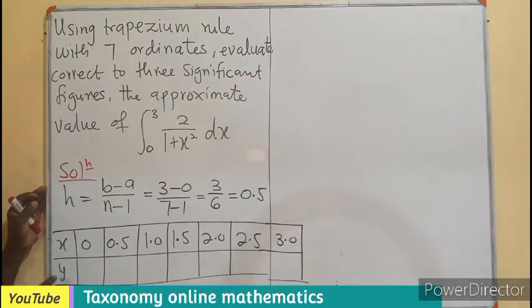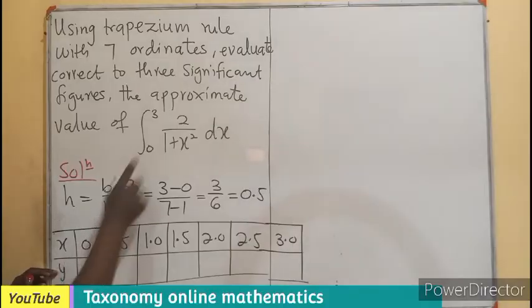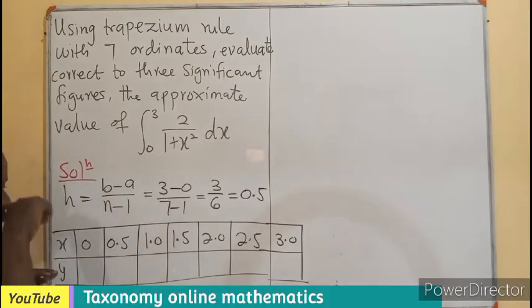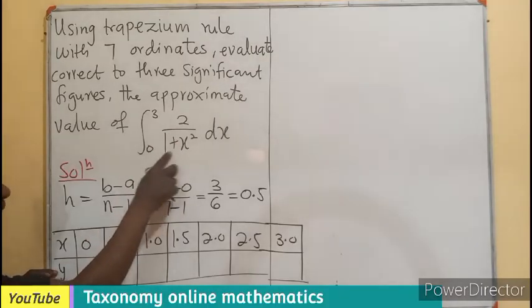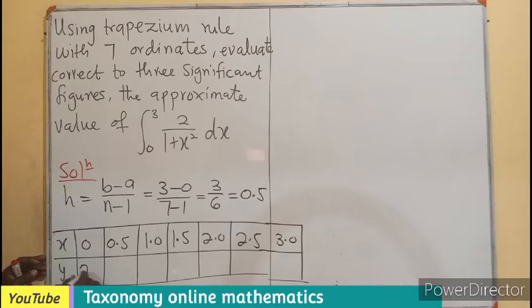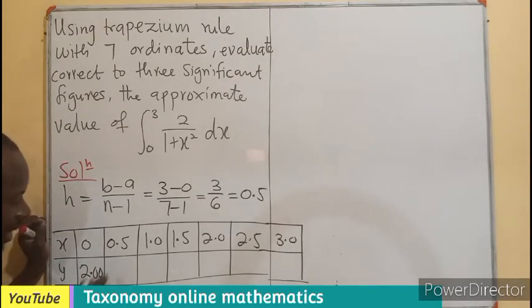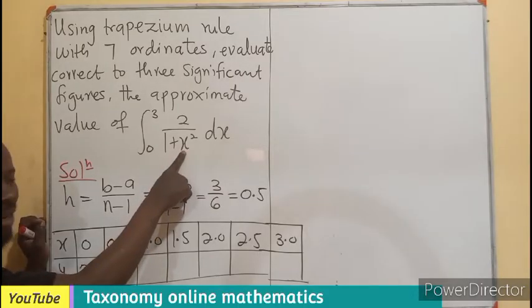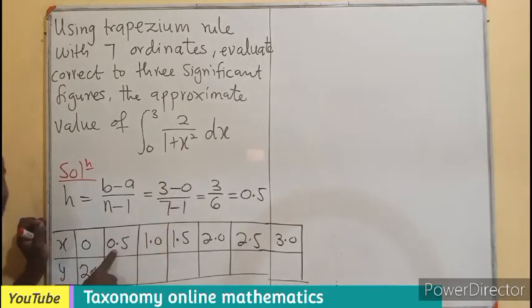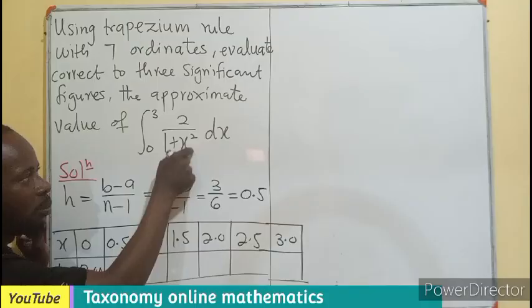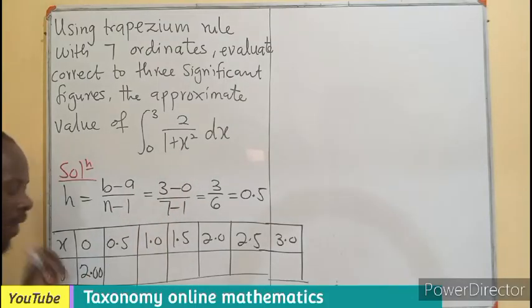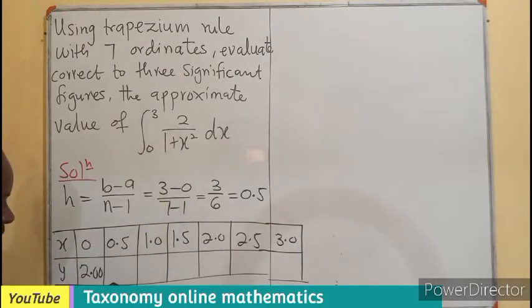Now what do we need? We need the y values. It will be 2 divided by 1 plus x squared. So y equals 2 divided by 1 plus 0, which is 2, so I have 2.00. I'm using two decimal places. Here we're going to replace x by 0.5.